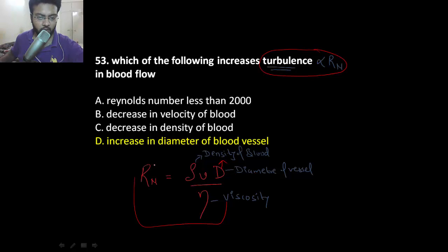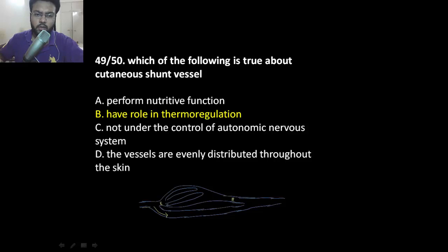If you increase the diameter of the blood vessel, Reynolds number will also increase and turbulence will also increase.